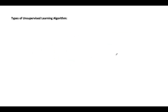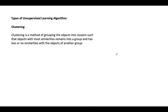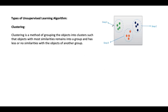Coming to the types of unsupervised learning — the first type is clustering. Clustering is a method of grouping objects into clusters: objects similar to each other are placed in one cluster, while objects with fewer similarities are placed in another. For example, objects of green color are in Group A, blue in Group C, and red in Group B.